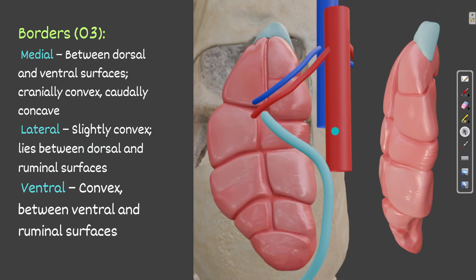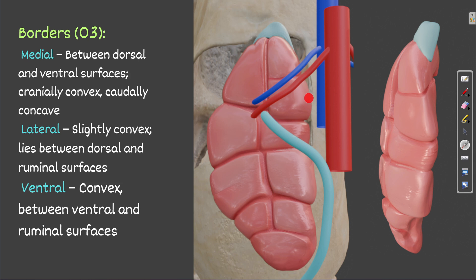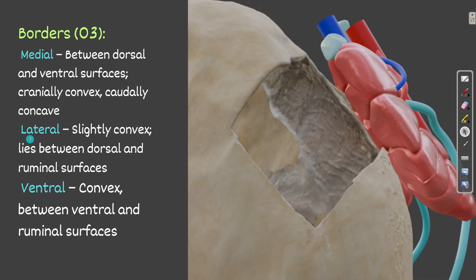The left kidney has three borders: medial, lateral, and ventral. The medial border is found between the dorsal and ventral surfaces. Cranially it is somewhat convex, then it becomes concave further along. The lateral border is slightly convex and lies between the dorsal surface and the ruminal surface.